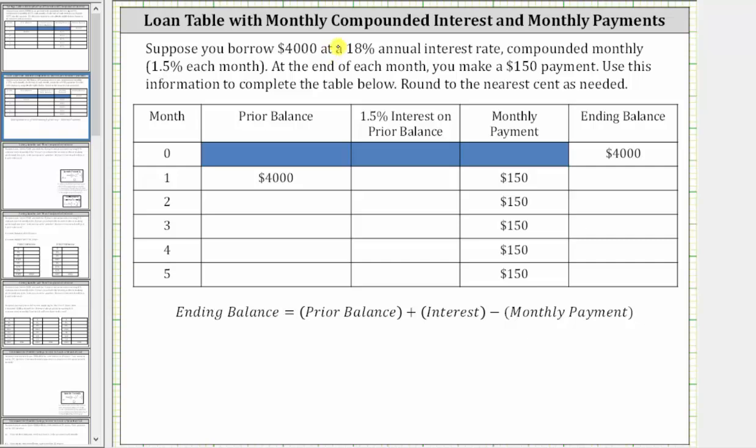Suppose you borrow $4,000 at an 18% annual interest rate compounded monthly, which comes out to an interest rate of 1.5% each month. At the end of each month, you make a $150 payment. Use this information to complete the table below, round to the nearest cent as needed.